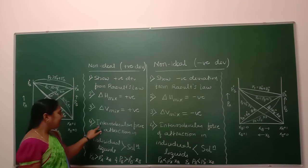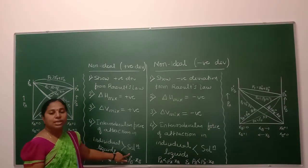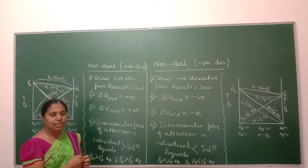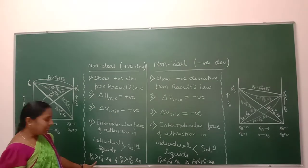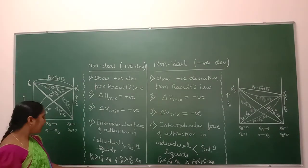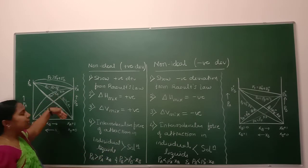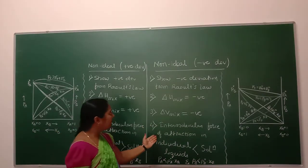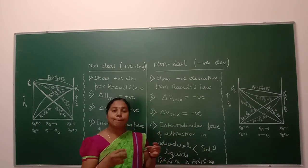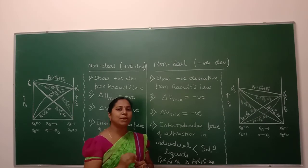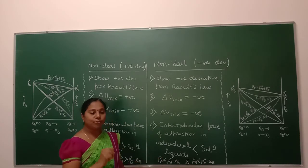The fourth difference: the intermolecular force of attraction in the individual liquids is greater compared to the solution in case of non-ideal with positive deviation. In case of solution, the particles are held together by weak force of attraction. As a result, those solution particles are trying to escape from the solution, so the pressure obtained is greater compared to the pressure from Raoult's law. Hence we get PA > P°A·XA and PB > P°B·XB. In case of non-ideal with negative deviation, the intermolecular force of attraction in individual liquids is less compared to the solution, so particles are held by strong force and only few particles move from liquid into vapor state, reducing the vapor pressure compared to Raoult's law.